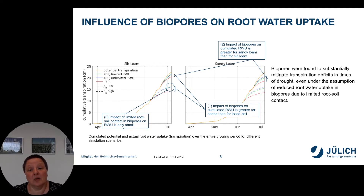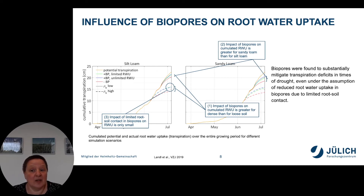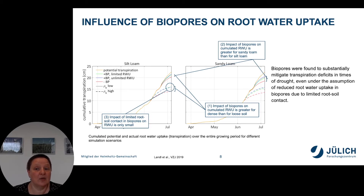Overall, the simulations showed that biopores substantially mitigate transpiration deficits in times of drought, even under the assumption of reduced root water uptake in biopores due to limited root-soil contact.